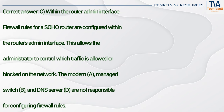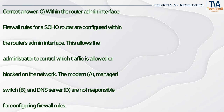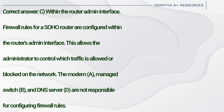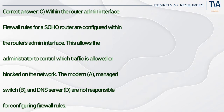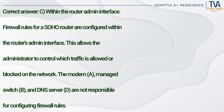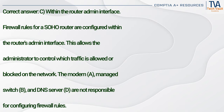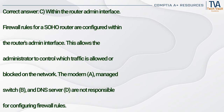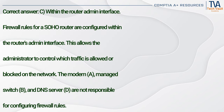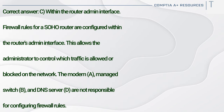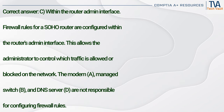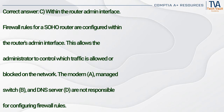Correct answer: C. Within the router admin interface. Firewall rules for a SOHO router are configured within the router's admin interface. This allows the administrator to control which traffic is allowed or blocked on the network. The modem (A), managed switch (B), and DNS server (D) are not responsible for configuring firewall rules.